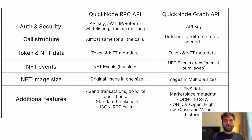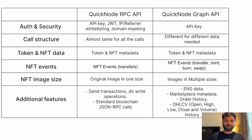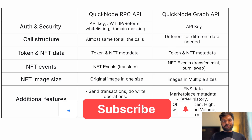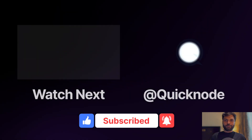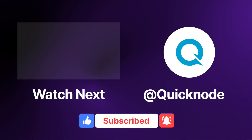Don't get me wrong — RPC API and GraphQL API are not in competition with each other. Both have their own use cases. Quicknode's RPC API is still the most performant and fastest API in the market. So based on your use case, either of those APIs may be useful to you. To get access to these APIs, create an account on quicknode.com from the link in the description. If you liked the video, like it, subscribe to the Quicknode YouTube channel, and press the bell icon so you don't miss any upcoming tutorials. Thank you everyone.